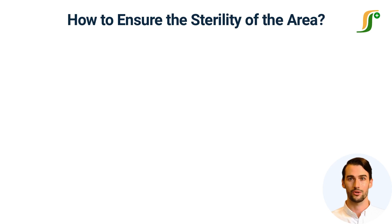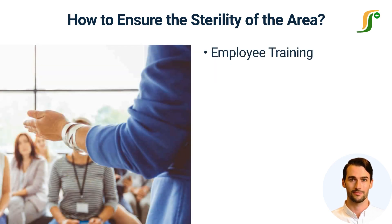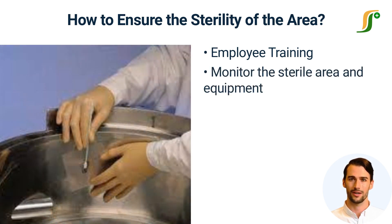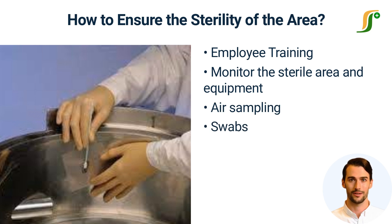It is very important to ensure that the sterile area is properly maintained. One of the most common ways is to train the employees to follow the sterile area rules and regulations strictly. Implement systems so that staff can easily find the source of contamination. Another way is to monitor the sterile area and equipment microbiologically for potential contamination. The area must be monitored by active and passive air sampling in every working shift. Equipment surfaces and personnel working in the area must be monitored using swabs and contact plates so that you can find the problem before it becomes serious.